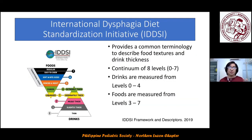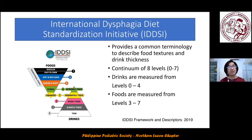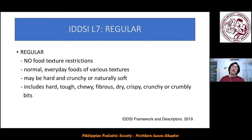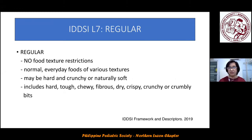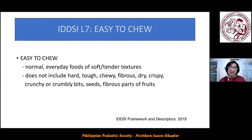If the answers to those questions are yes, we refer to the International Dysphagia Diet Standardization Initiative (IDDSI). It provides common terminology to describe food textures and drink thickness — a continuum of eight levels, zero to seven. Drinks are measured from levels zero to four, and foods from levels three to seven.